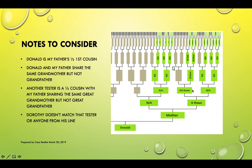I meant to put 'second great' here — sorry, I put 'third great' by mistake. This should be the second great-grandmother. So I know Dorothy Grant is coming from Donald's second great-grandmother's line.